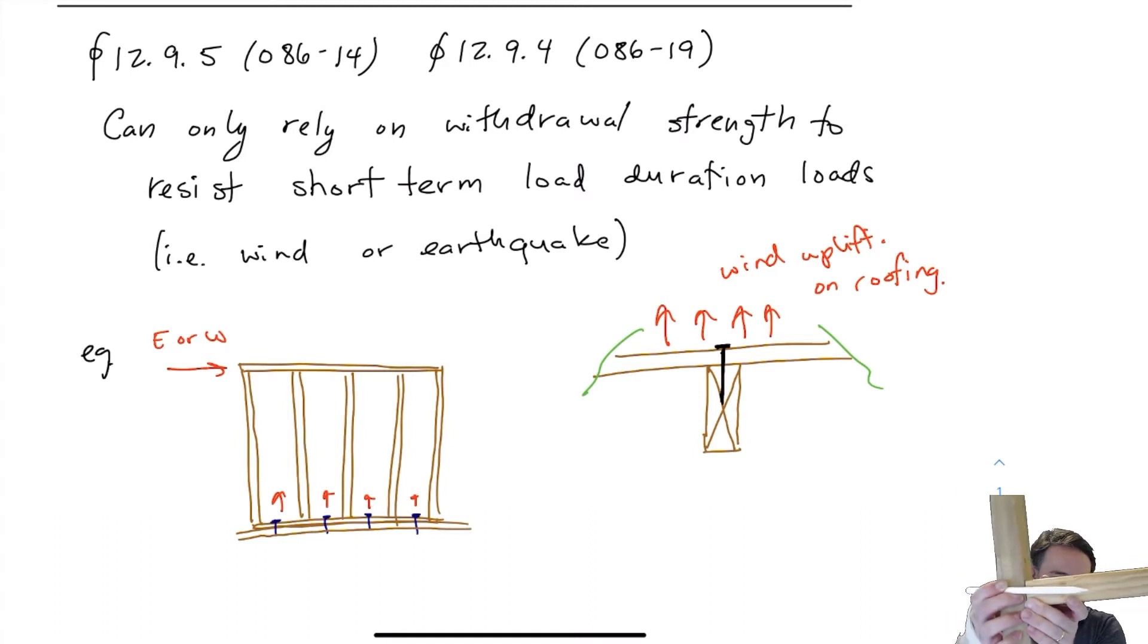But I cannot use a connection like this to prevent against pulling this out in this direction, it's not permitted. You can imagine as poor as this shear situation is, just imagine how easy it is to pull this out.